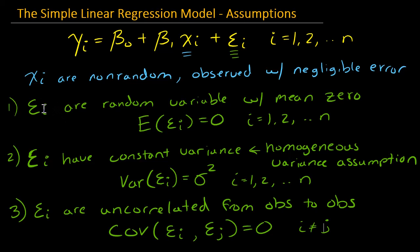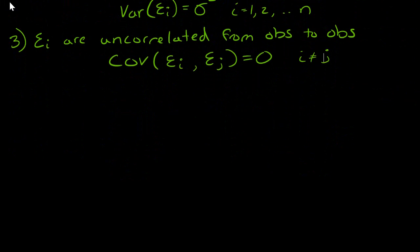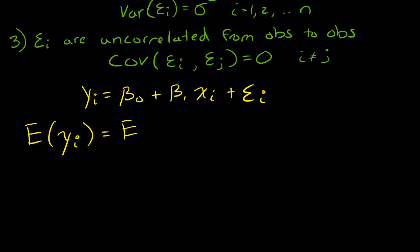So using these assumptions, in particular using the assumptions here about our model error, we can say something about the expected value and variance of y. So let me actually scroll down and let's talk about that. So my model is yi equals beta naught plus beta one x sub i plus epsilon sub i. So starting with if I want to find the expected value of yi, that's the expected value of this model.